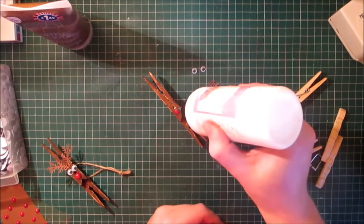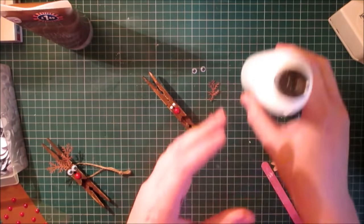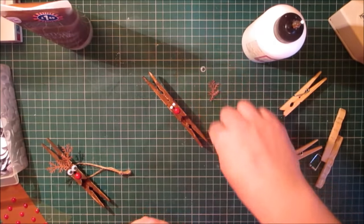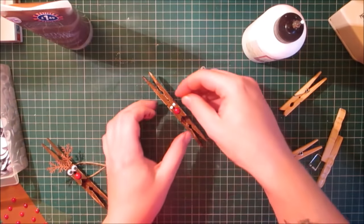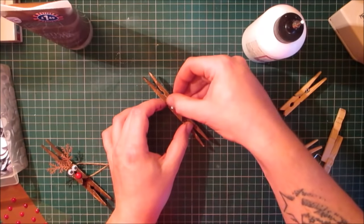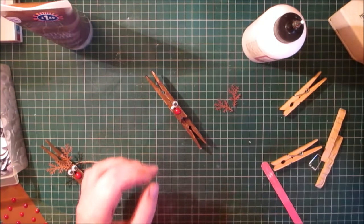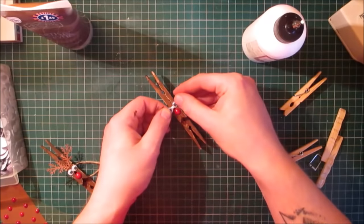So pop a dab of glitter glue for the eyes. I can barely pick that one up, it's very small. Pop that one on, pop the second one on.